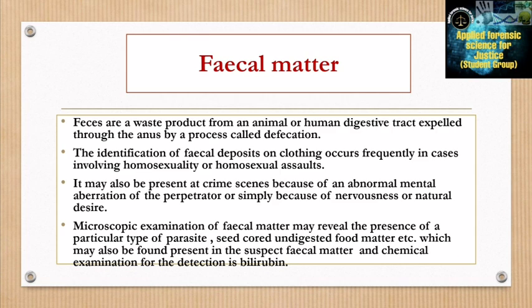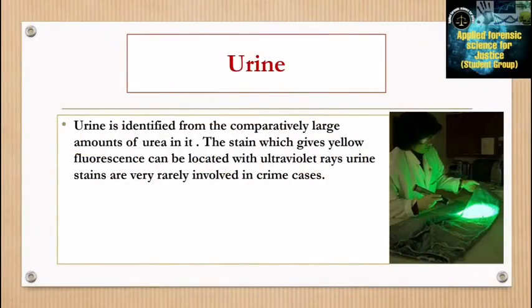Fecal matter refers to waste products from an animal or human digestive tract, expelled through the anus by a process called defecation. The identification of fecal deposits on clothing occurs frequently in cases involving homosexual assault. Examination of fecal matter may reveal the presence of particular types of parasites, seeds, undigested food matter, etc., which may also be found in the suspect's fecal matter, along with chemical examination for detection.